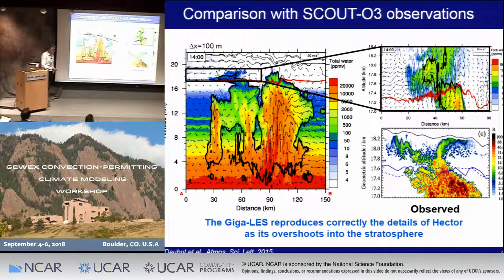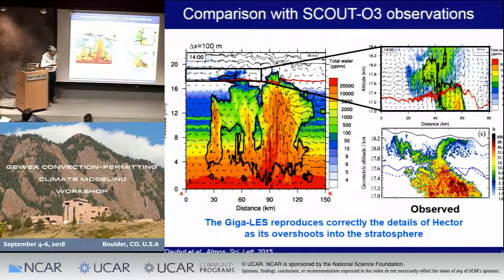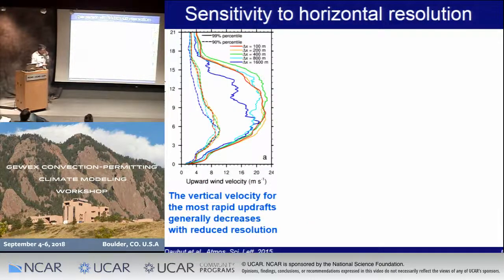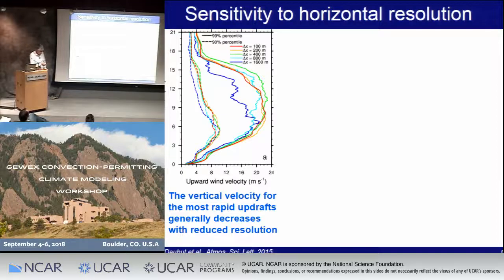We were motivated to do this single case by observations over the Tiwi Islands, made from a geophysical aircraft at 18-kilometer altitude, which observed a vertical plume — a backscatter coefficient across the vertical tropical tropopause at 17 kilometers — which we are able to more or less reproduce using our giga LES. We also made a sensitivity study to horizontal resolution, keeping all the same physical parameterizations and the same vertical levels.